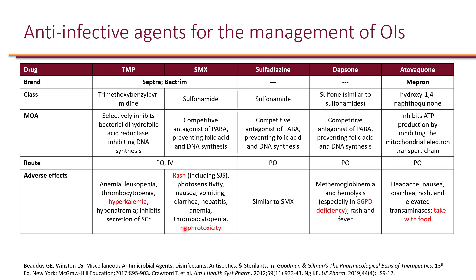Trimethoprim and sulfamethoxazole together can cause nephrotoxicity — a combination of sulfonamide-induced nephrotoxicity and trimethoprim's artificial inhibition of serum creatinine secretion. Renal dose adjustment is required: if creatinine clearance is less than 30, half the dose should be given.